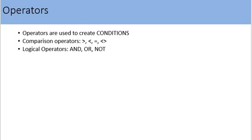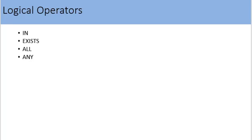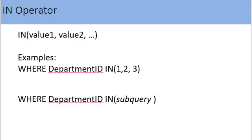We have been using comparison operators in previous examples — operators are used to create conditions in WHERE and HAVING clauses. Now I am going to introduce some more logical operators, some of which are most often used to write subqueries. The IN operator is used to compare a value to a list of literal values. It returns true if the value exists in the list, and false if it does not. A comma-separated list of values is provided in parentheses after the IN keyword. We can also write a subquery inside the IN operator — in this case, subquery results are treated as the list of values.